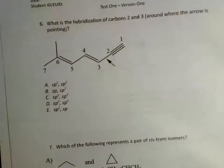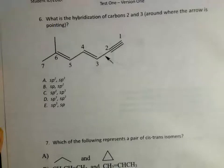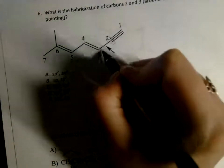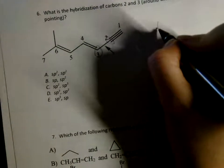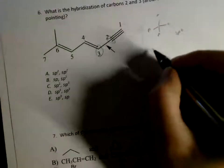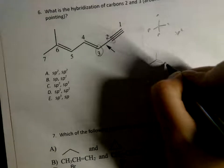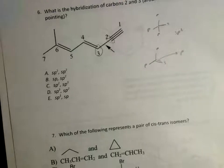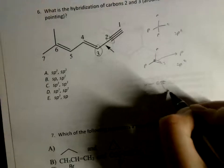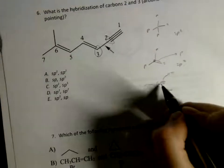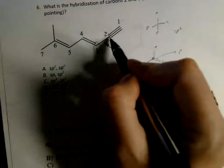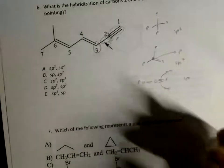For question 6 — what is the hybridization of carbons 2 and 3? In proper IUPAC numbering: 1, 2, 3. For hybridization: if there are 4 things bonded, it's SP3; if 3 things bonded, it's SP2 (the pi bond uses another P but isn't part of hybridization); if 2 things bonded, it's SP. Carbon 2 is bonded to only 2 things, so that's SP hybridization.